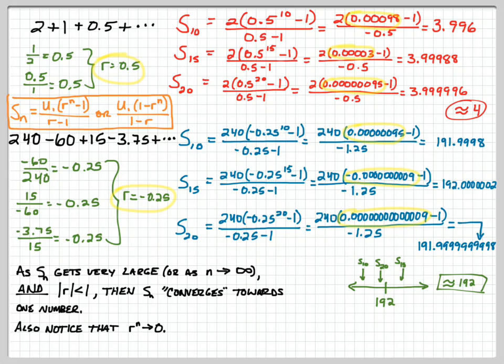So because we mathematicians are kind of lazy and we don't like to write as much, what we're going to say is that we can come up with a general formula of S of N is equal to U of one over one minus R.